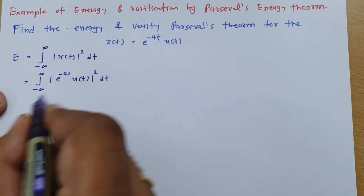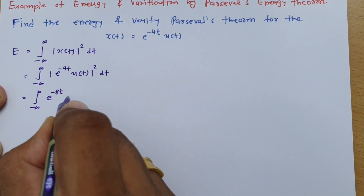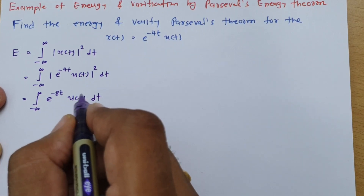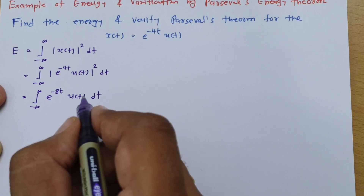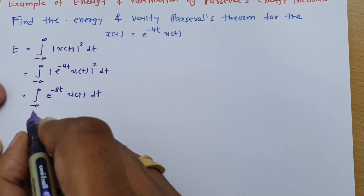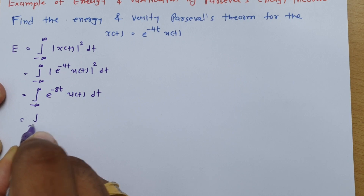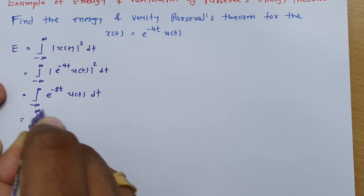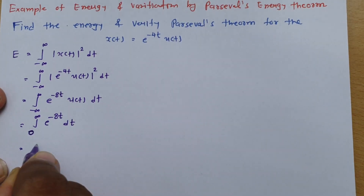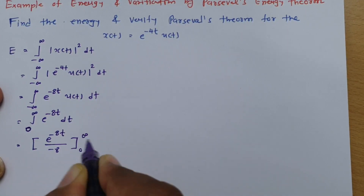Squaring the expression gives e^(-8t) and u(t)² = u(t) dt. Since u(t) is the unit step signal, it varies from 0 to infinite with value 1. This changes the integration limits from minus infinite–to–infinite to 0–to–infinite, because u(t) = 0 for t < 0. So the integral becomes integration from 0 to infinite of e^(-8t) dt, which evaluates to e^(-8t) / (-8) with limits from 0 to infinite.